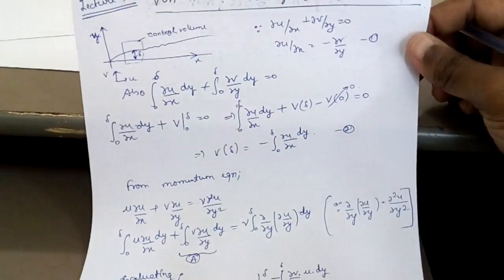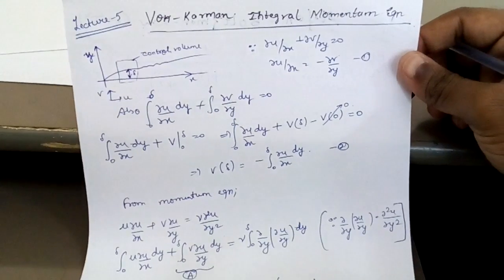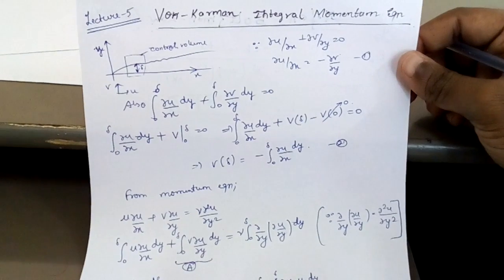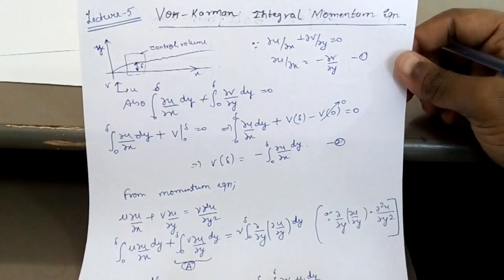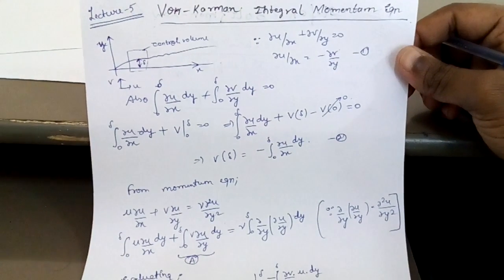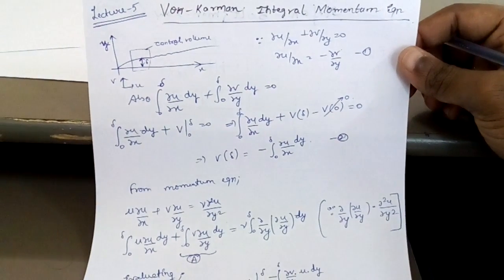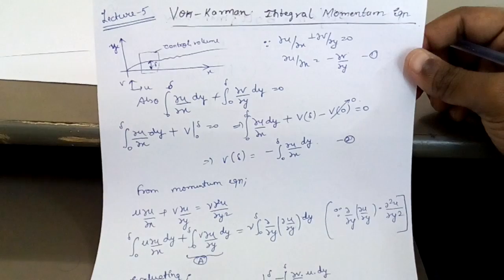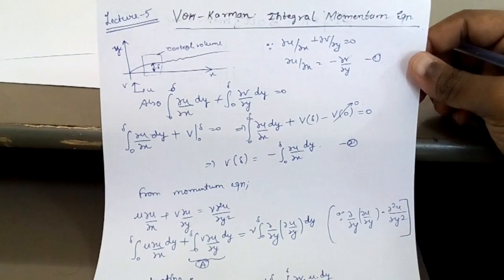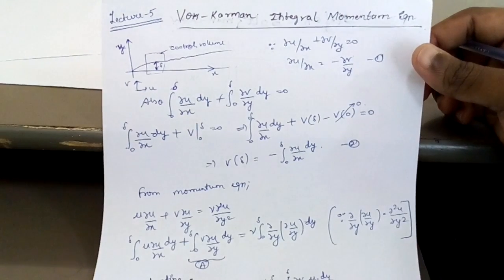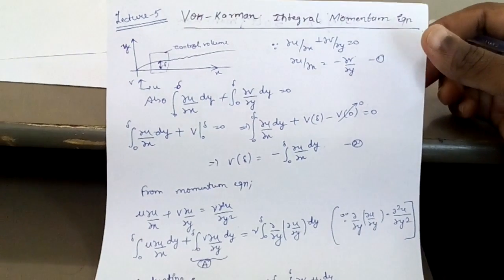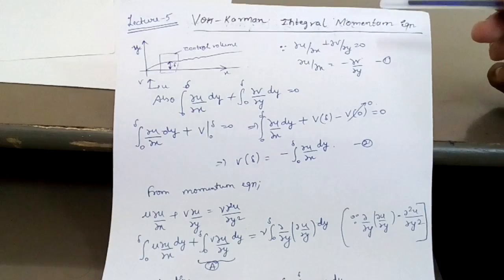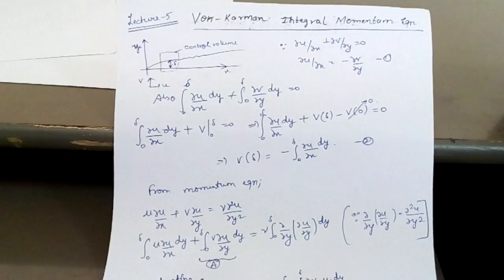Hello everyone and welcome back. This is lecture 5 and the topic is the von Karman integral momentum equation. This is a bit complex derivation and I will try my best to make you understand. If you find this video helpful please give a big like, and at the end of the video if you have any doubt please mention in the comment section below. Please check out my other videos in the description and please subscribe to my channel.